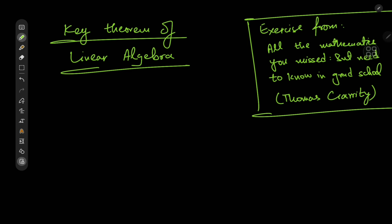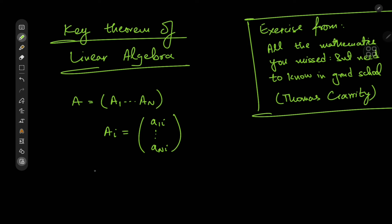Before we get started on proving equivalences, let me introduce some notation. For an n by n matrix A, we'll write it in terms of its column vectors as a1 all the way to an. So ai is the i-th column vector, that is a1i all the way up to ani. The notation for the determinant will be the function d of A.